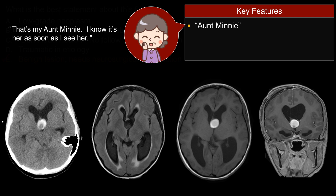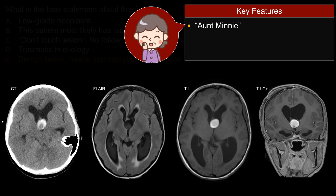It's like seeing your Aunt Minnie. When you see her, you know her right away. You recognize her. You don't have to think about it — you know that's your aunt. For this particular case, you can see this lesion is at the anterior or anterosuperior aspect of the third ventricle, next to the Foramen of Monro.